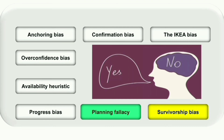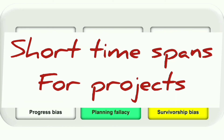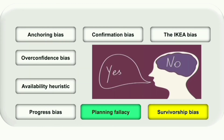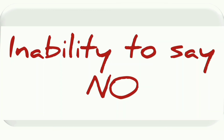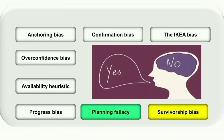The next bias is called the planning fallacy. This is the tendency to underestimate the time it will take to complete a project, while knowing that similar projects have typically taken longer in the past. It involves giving shorter time spans to complete a project by overestimating our efficiency. This generally comes out of the inability to say no — we set a deadline, and when unexpected things happen we proceed without considering our priorities.